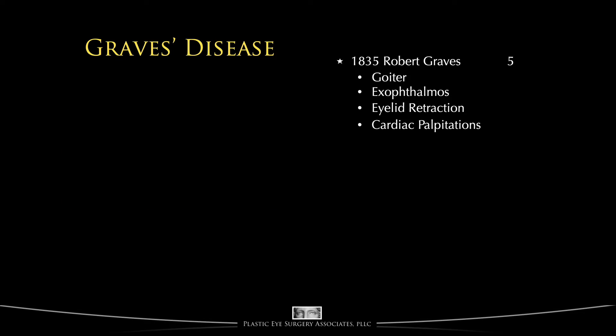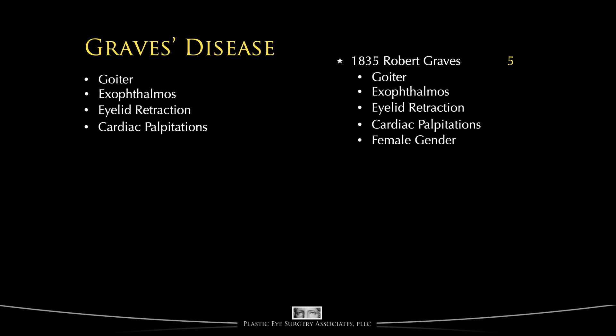Irregular heartbeat or cardiac palpitations, and female gender. So if a person doesn't have all five of these characteristics — for example, if a person is male — then that person doesn't really have what Graves described, and technically doesn't have Graves' disease. If a person has only three characteristics — simply a goiter, bulging eyes, and eyelid retraction — then you might say that person has Basedow's disease, described by Carl von Basedow in 1840.